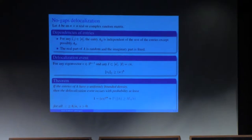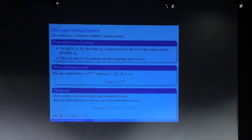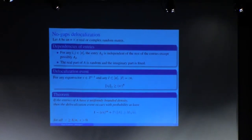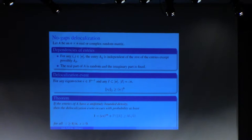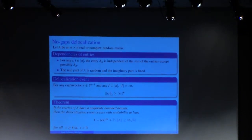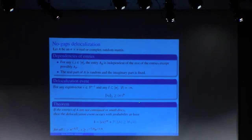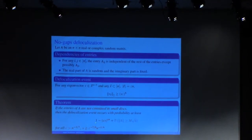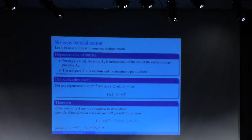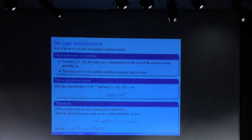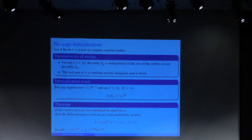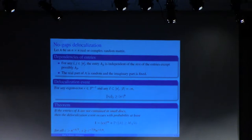This is what we are going to prove, but there is a much more general analog of this result: namely the same statement is true without almost any assumption on random entries — if we assume that the entries are not deterministic and not contained in small disks, then the same result would be true and the delocalization will be likely. This is a much more complicated result; we will discuss the previous one, but the approach to both results is the same.